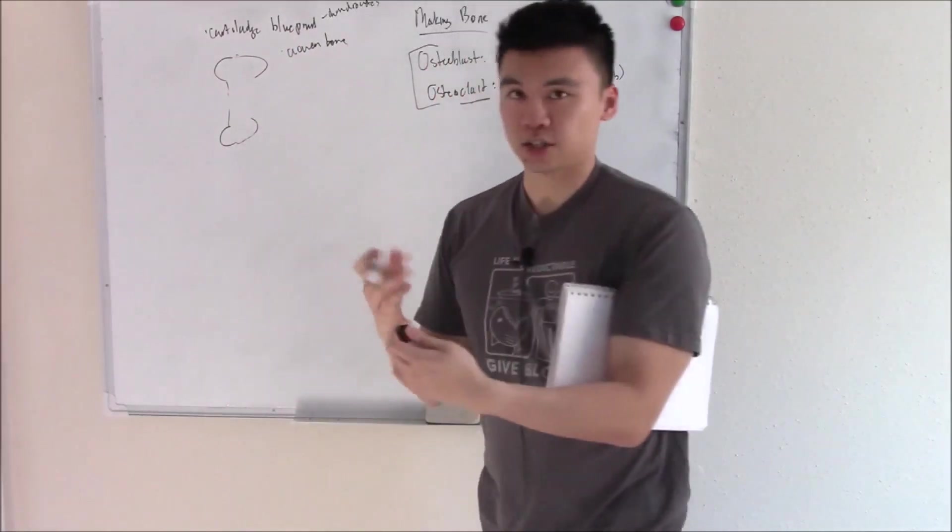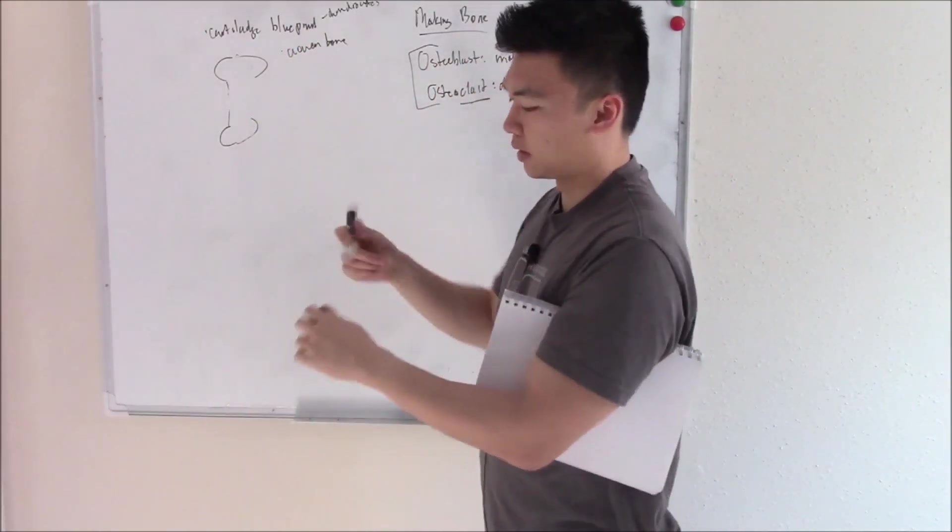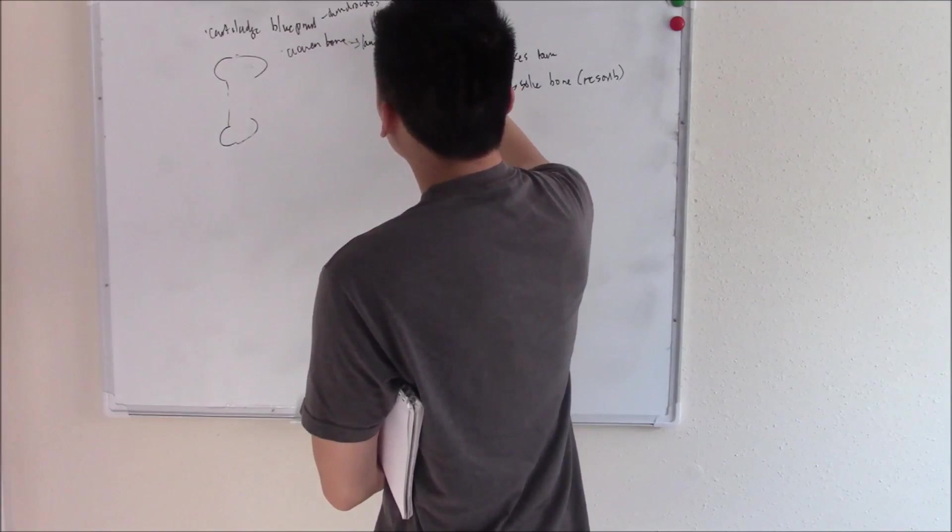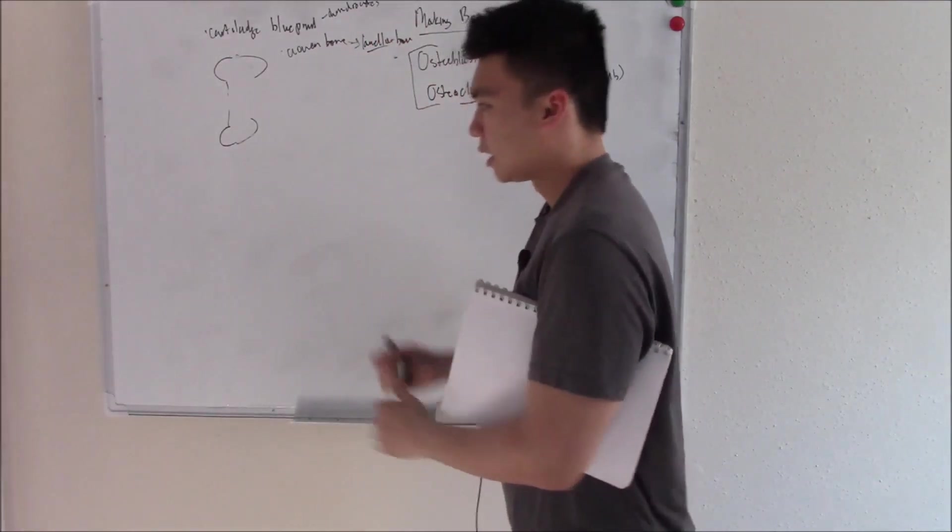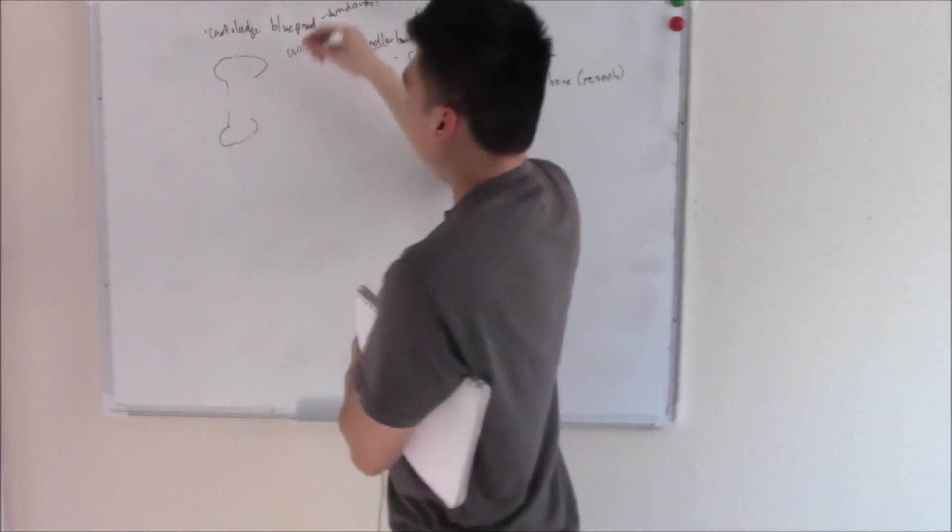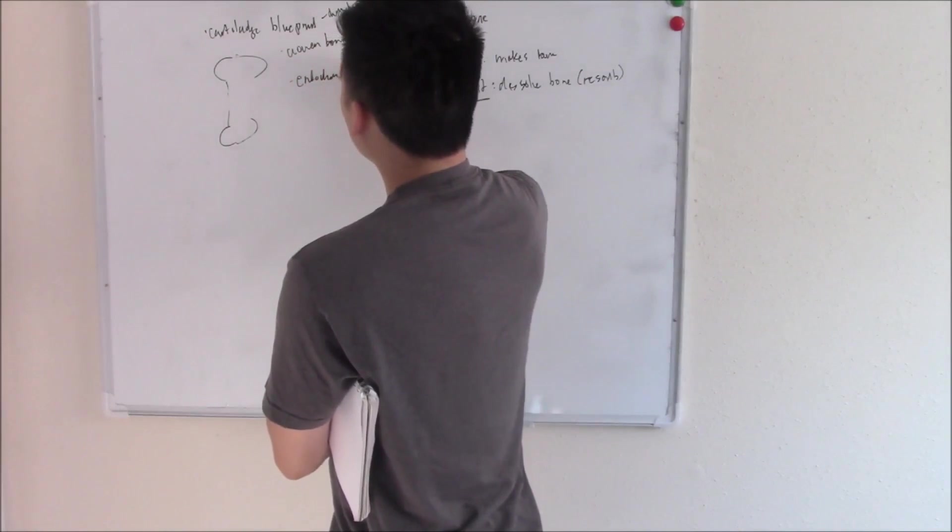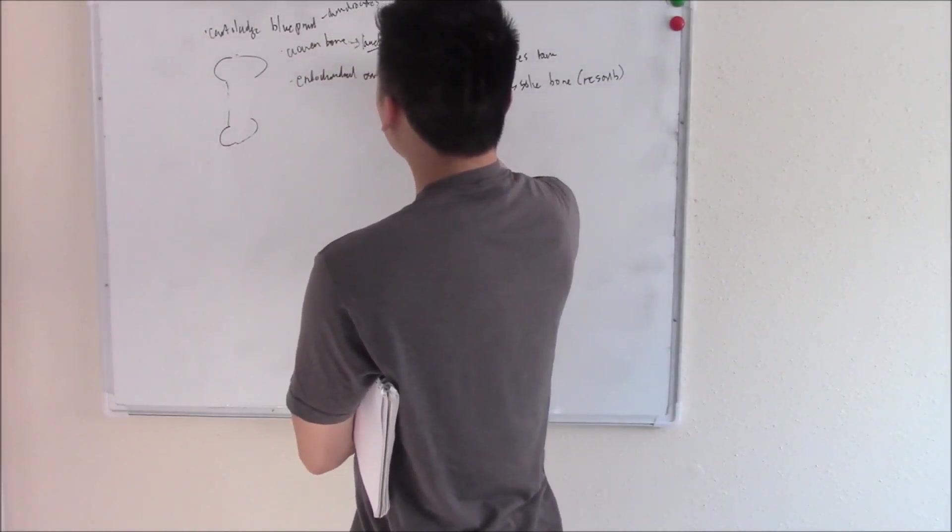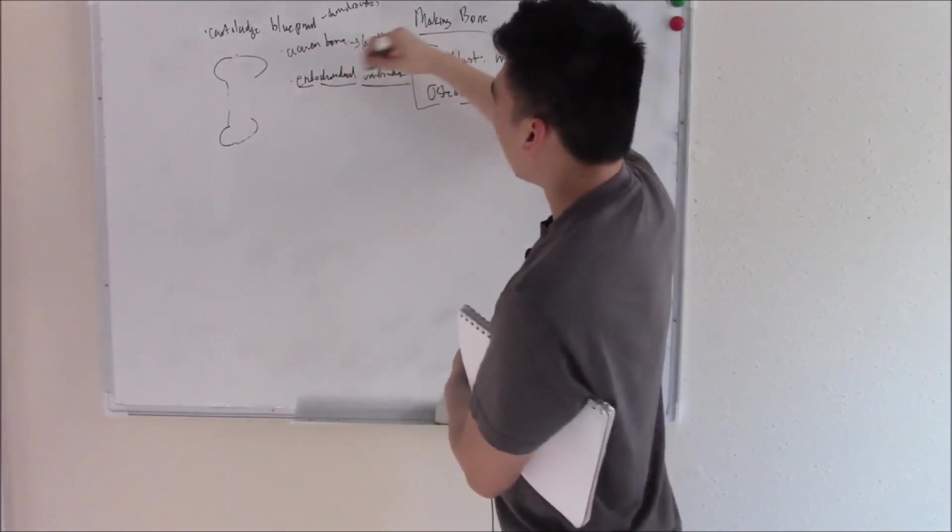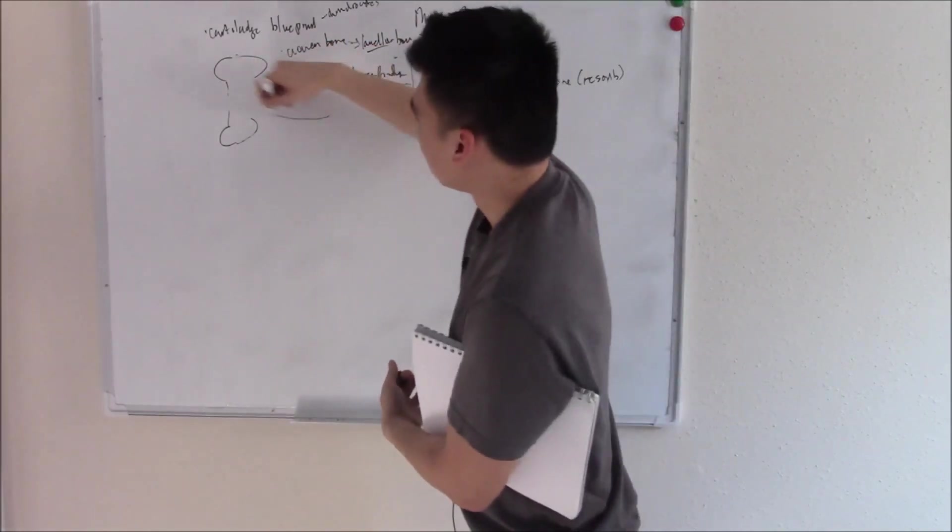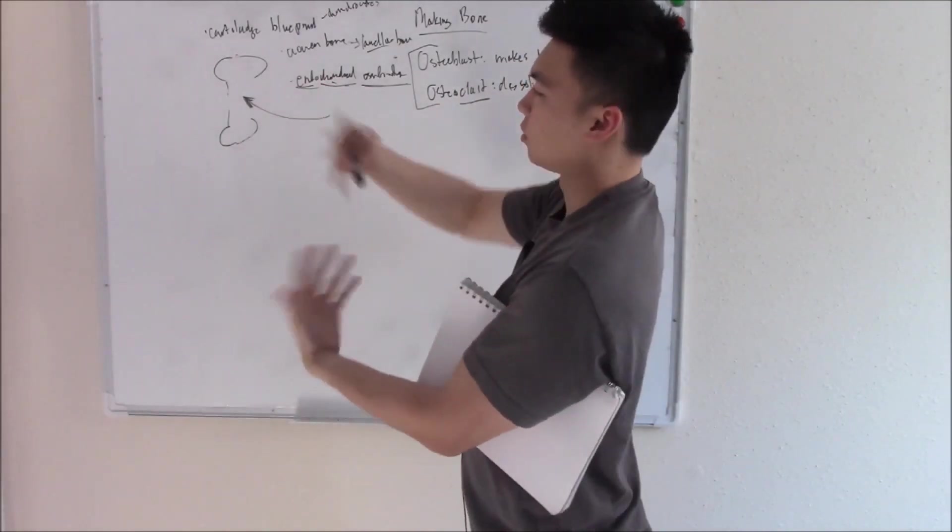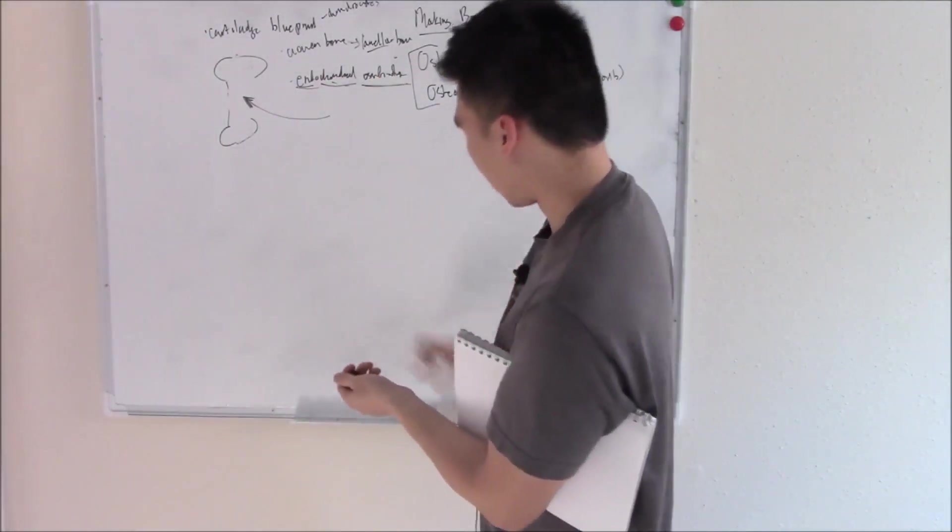That woven bone is not as strong, it's kind of shaky. Eventually we keep weaving and keep weaving until we have a solid sheet, and we turn that into lamellar bone. Lamellar means sheet. We turn that weave of bone into a solid sheet and then we have our bone. We call this process endochondral ossification. Ossification means making bone. Endo in chondral cartilage - making bone inside of cartilage. We had our cartilage blueprint, our osteoblast and osteoclast came in, made our woven bone, and then finally made it into a plate, into proper bone.